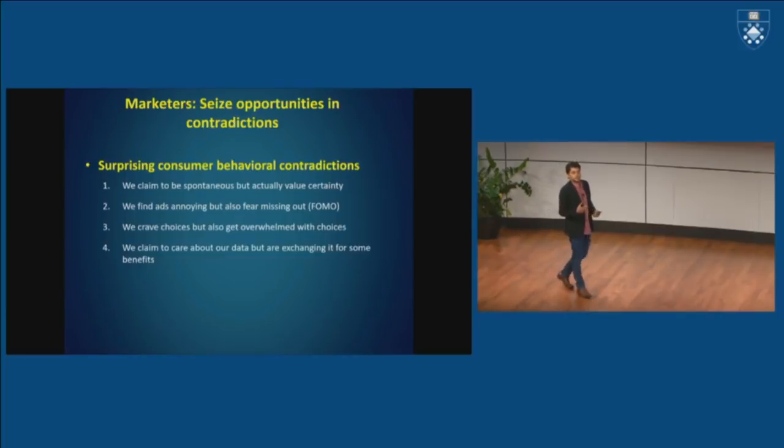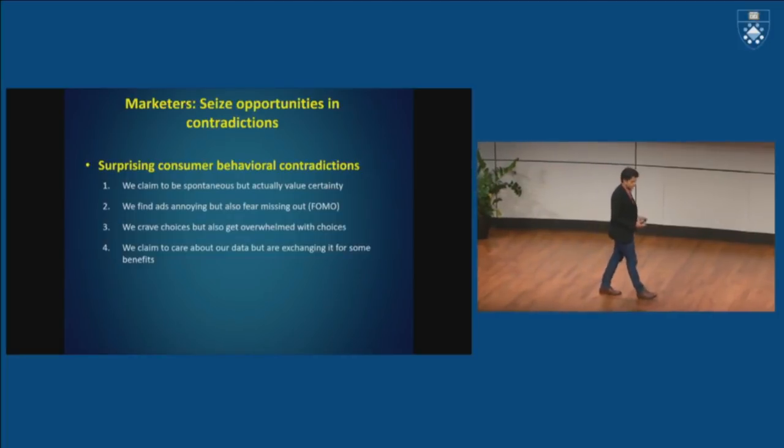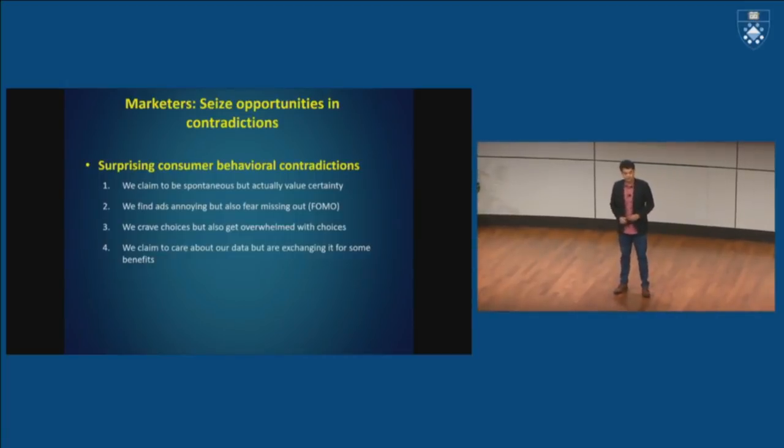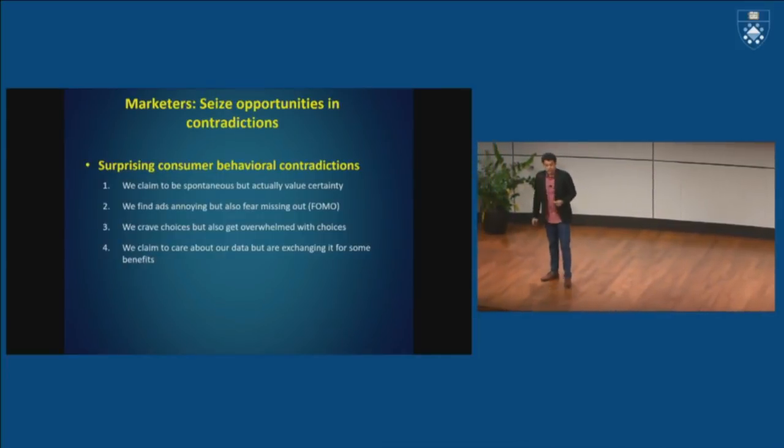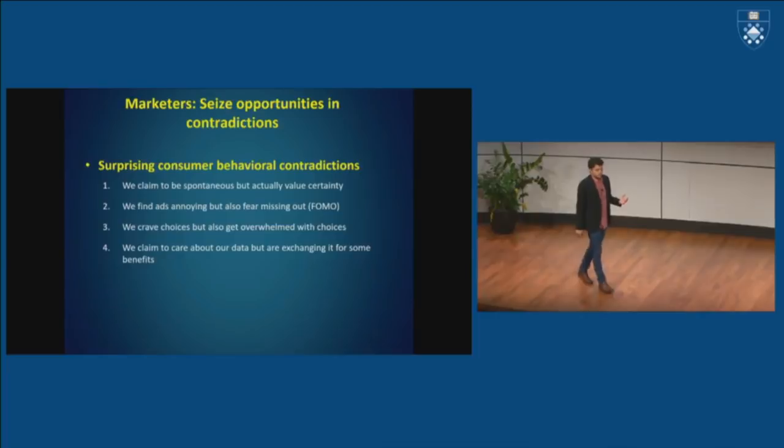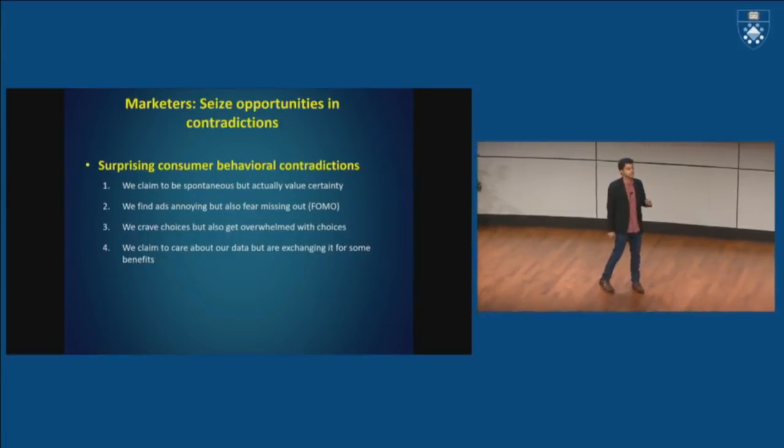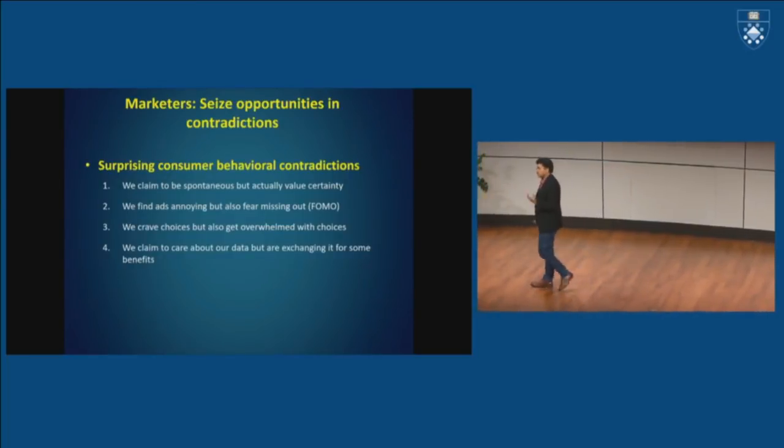So as marketers or as data scientists, one thing we all will look for is consumer behavior. And what we have seen over the last decade or so investigating this phenomena, there's some surprising and interesting contradictions, behavioral contradictions. For example, vast majority of consumers who we studied will claim to be spontaneous, we're very impulsive, we're not planned. And yet, when we look at their actual behavior, their data, turns out they're a lot more predictable. So there's a contradiction right there.